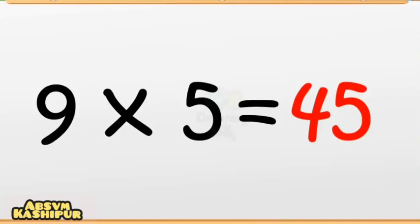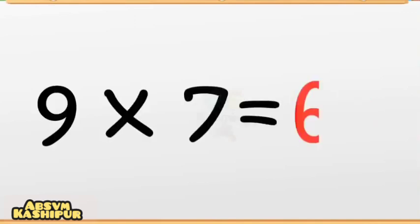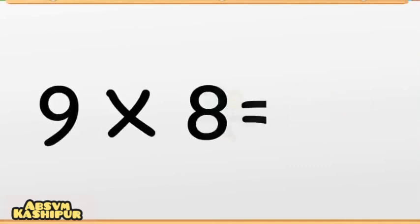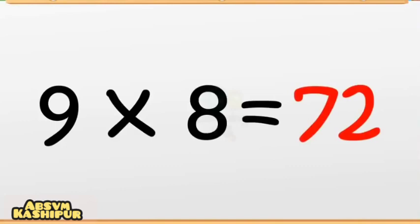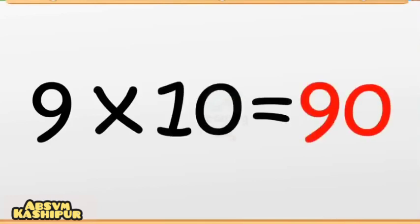Nine sixes are fifty-four. Nine sixes are fifty-four. Nine sevens are sixty-three. Nine sevens are sixty-three. Nine eights are seventy-two. Nine eights are seventy-two. Nine nines are eighty-one. Nine nines are eighty-one. Nine tens are ninety. Nine tens are ninety.